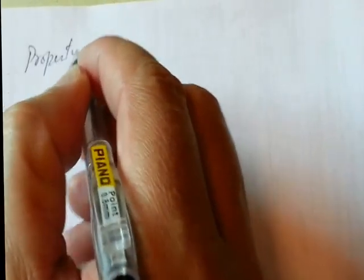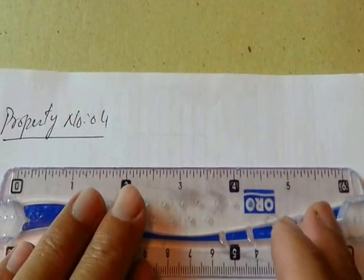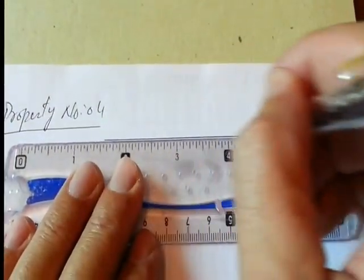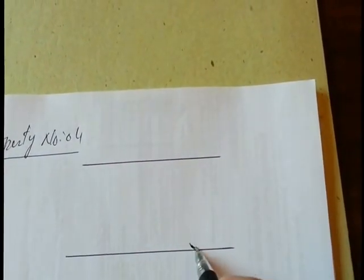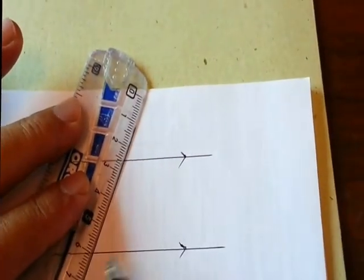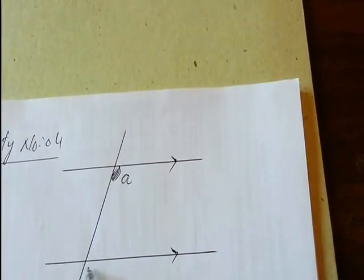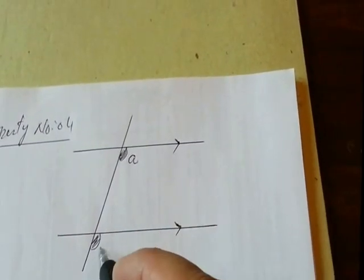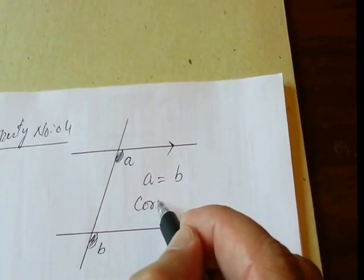Property 4: If there are two parallel lines and one line cutting through both, the angle formed at point A and the angle formed at point B are equal — these are known as corresponding angles.